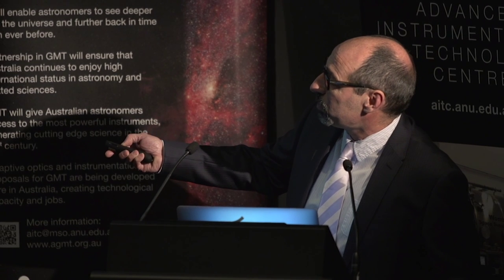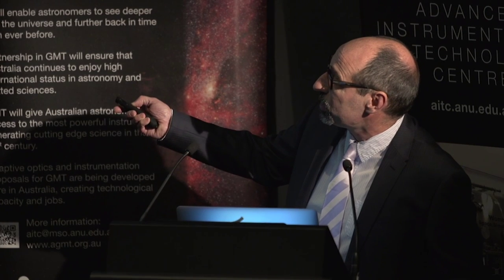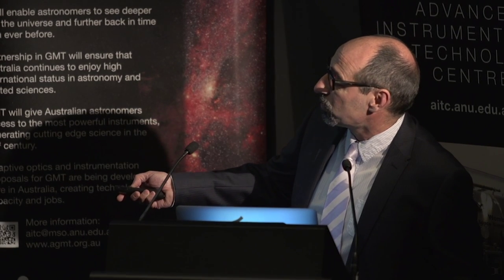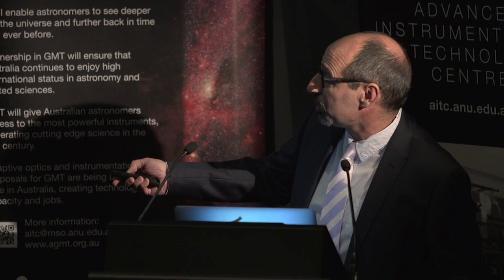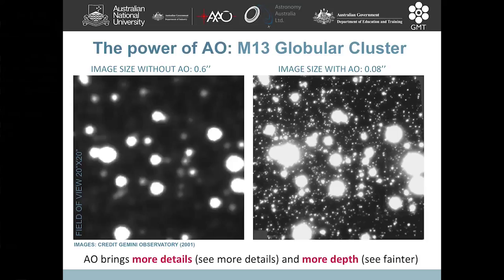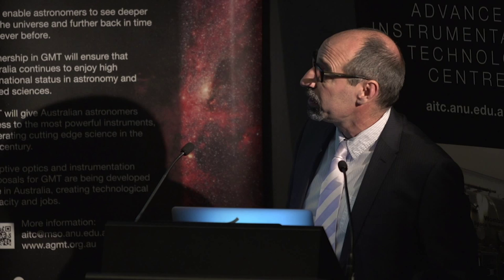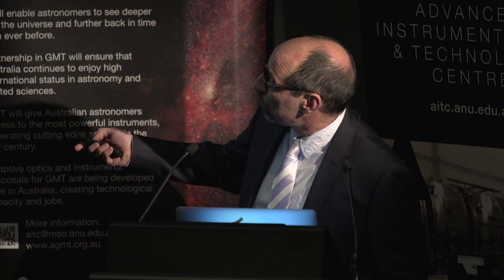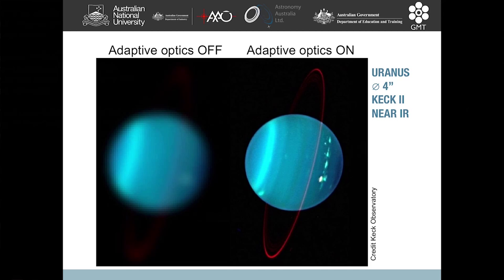It demonstrates very clearly that with adaptive optics, you see many more details and you can also see deeper — revealing very faint stars that were previously invisible. Another striking example is from Keck Observatory: an image of Uranus without and with adaptive optics, showing a really striking difference.